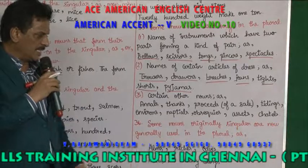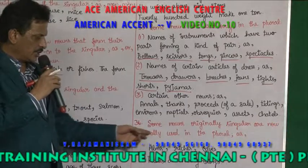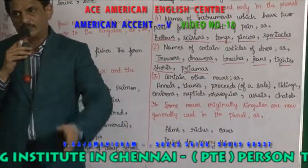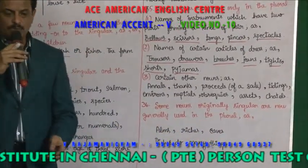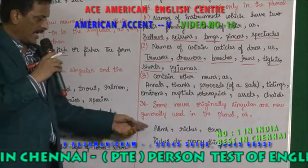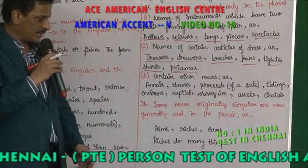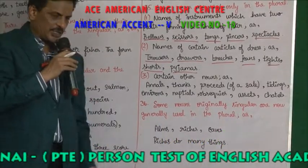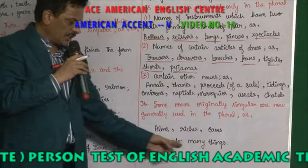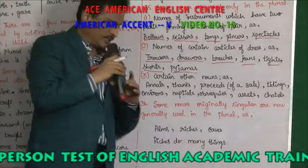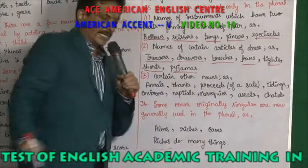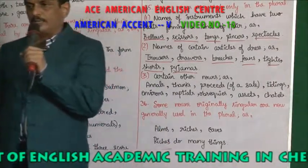Some nouns originally singular are now used as plural: alms, riches, eaves. Riches can do many things. So singular and plural.